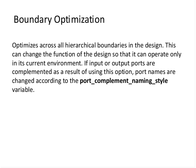There is one option called boundary_optimization. If you enable boundary optimization, DC will optimize across hierarchical boundaries. This means that the design implementation of a module could now be different from its RTL description when viewed from the top level. In most cases where boundary optimization is enabled, it might happen that input or output ports are complemented as a result of this process, and thus the netlist of that sub-design will not be functionally equivalent to the RTL. So use this carefully.